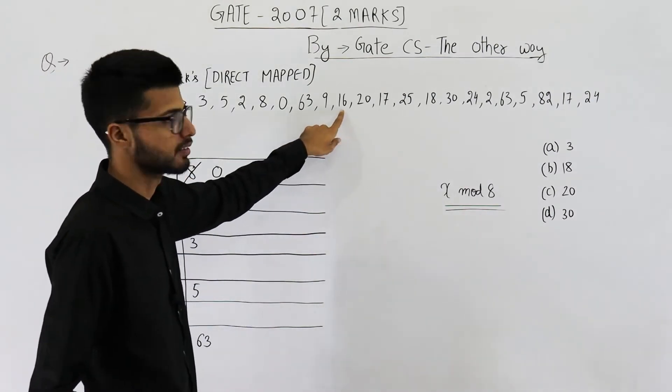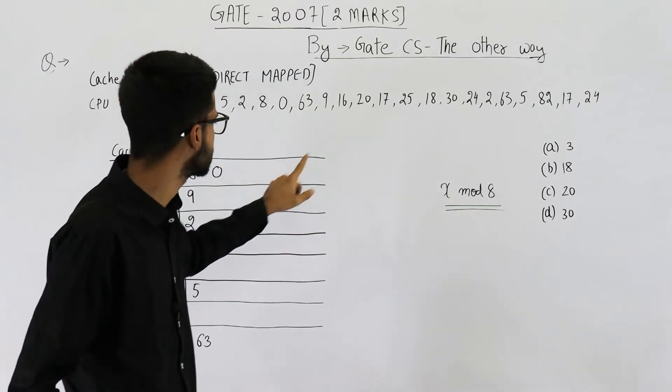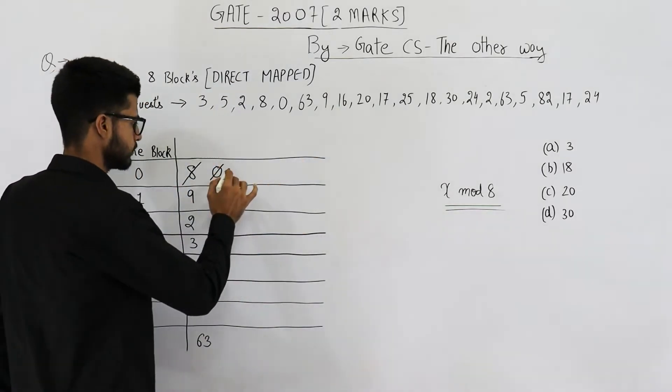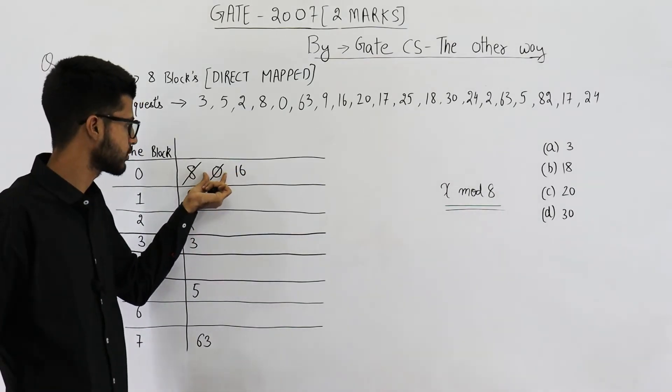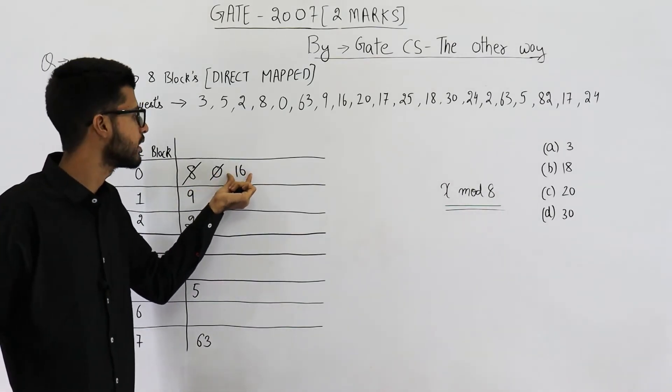Next one is 16, 16 mod 8 is 0. You know 8 twos are 16. So it will go here. Again, you will replace whatever is present here and overwrite it with 16.